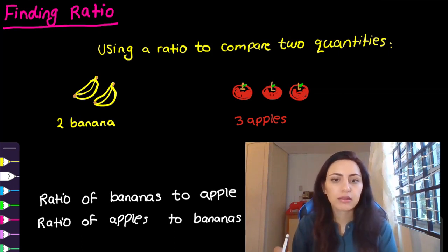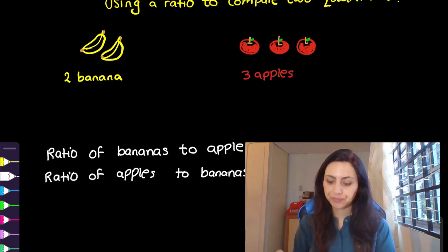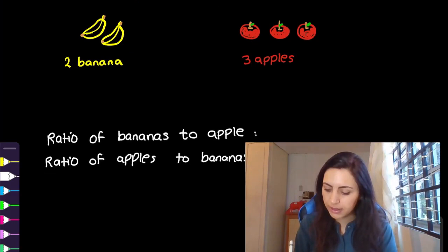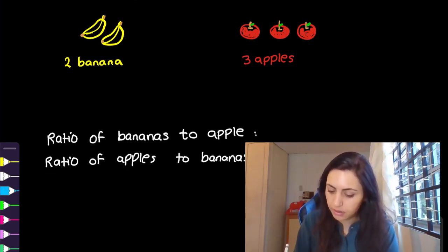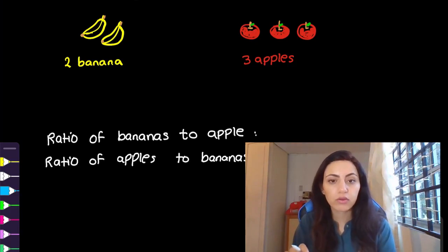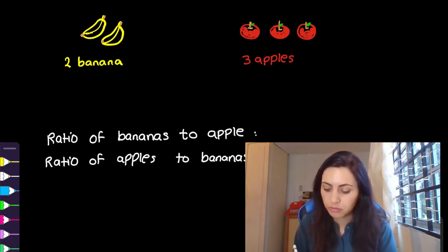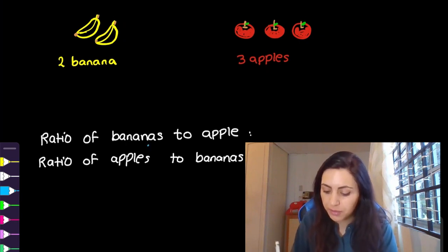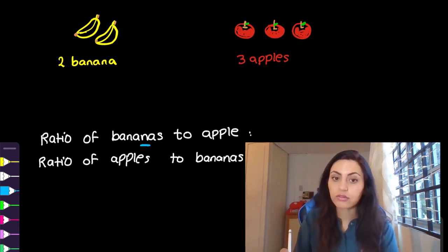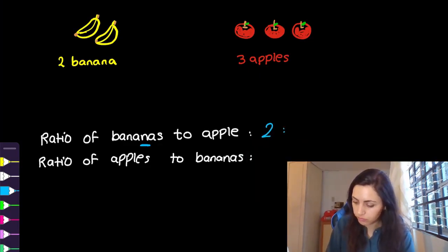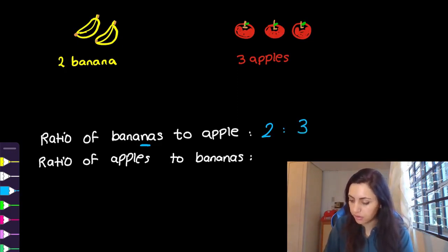So what is the ratio that you can see? The ratio of banana to apples. Whenever we read the question, you have to pay attention to the words. It says ratio of banana to apple, so the first thing we look at is banana, which is two. And apples is three.